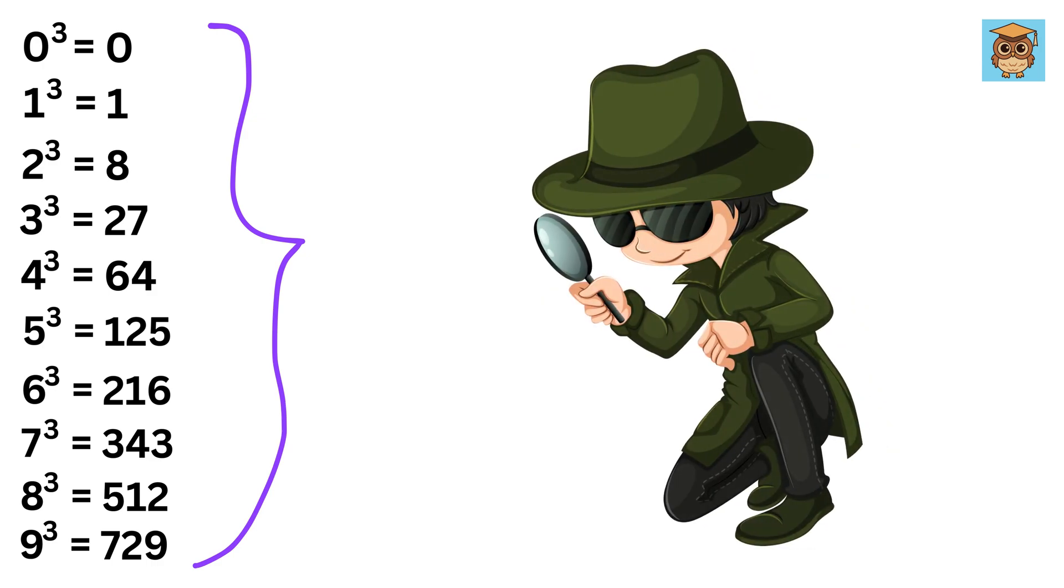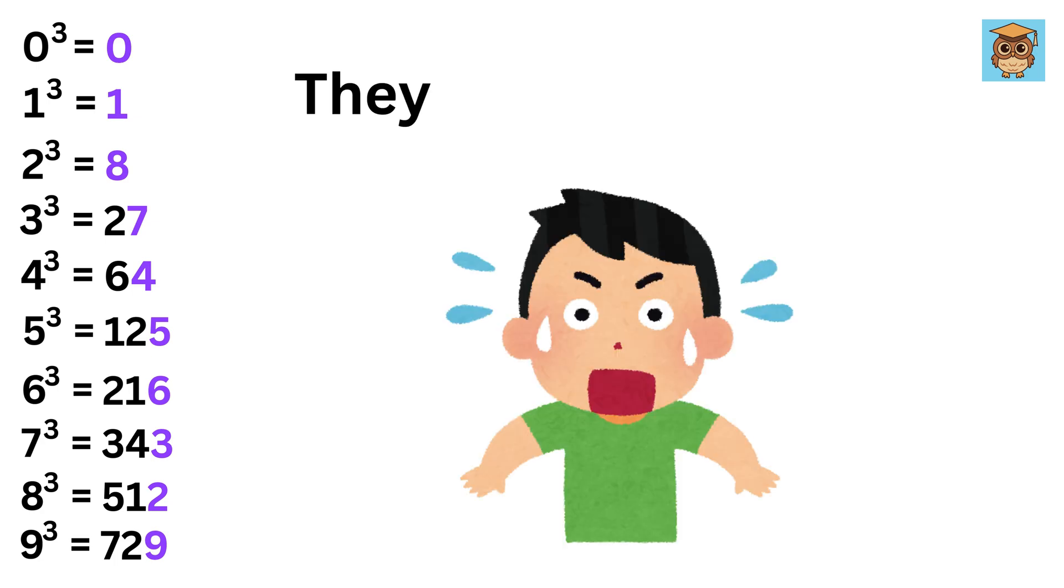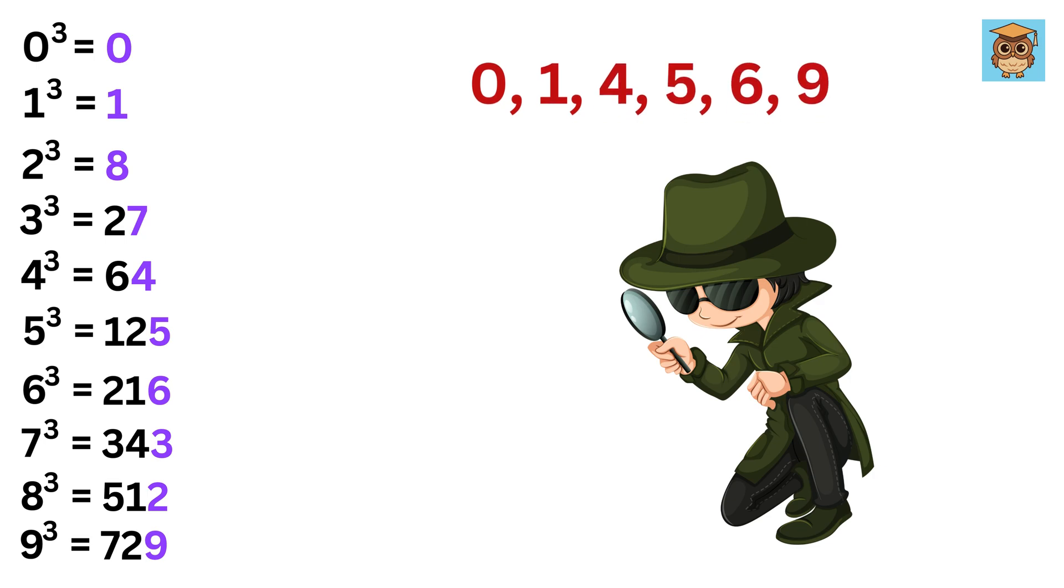Now look at the last digit of all these values. I have colored it differently, and when you look at those values, you will notice that they are all different, and this is what will help us quickly find the cube root of any perfect cube. Also, if you notice these six numbers, their last digit is the same as the number itself. And for the rest, 2 and 8 are interchangeable, and 3 and 7 are interchangeable.